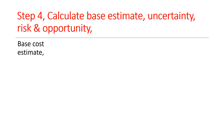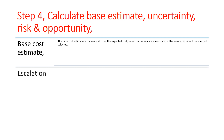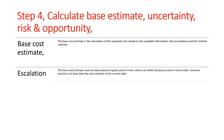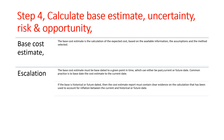This step is the core of the cost estimating practice, where the key components of the cost are quantified. Base Cost Estimate: the base cost estimate is the calculation of the expected cost, based on the available information, the assumptions, and the method selected. Escalation: the base cost estimate must be base-dated to a given point in time, which can either be past, current, or future. Common practice is to base-date the cost estimate to the current date. If the base is historical or future-dated, then the cost estimate report must contain clear evidence on the calculation that has been used to account for inflation between the current and historical or future date.